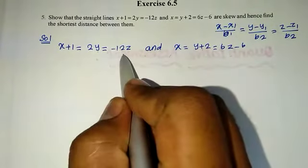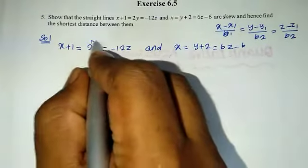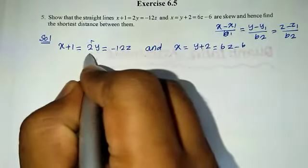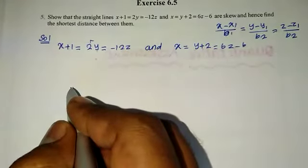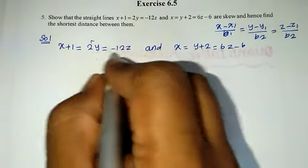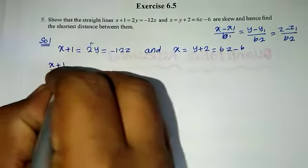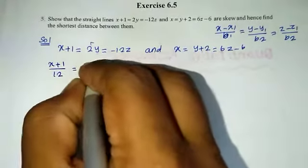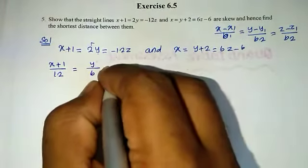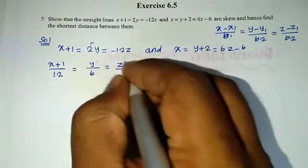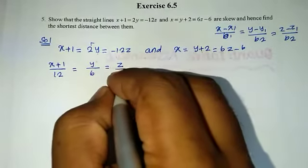The coefficients 1, 2, and minus 12 are not equal, so let's convert. We find the LCM of 2 and 12, which is 12. So dividing through, x plus 1 over 12 equals y over 6 equals z over minus 1. So the first line in standard form has direction ratios 12, 6, minus 1.